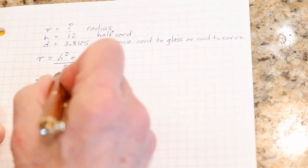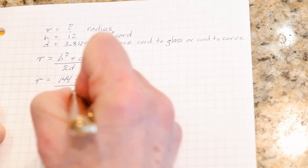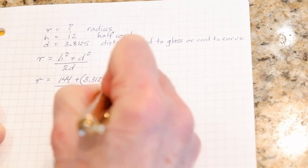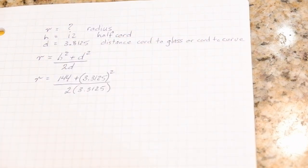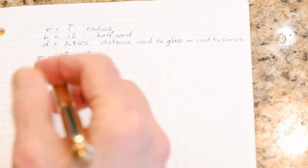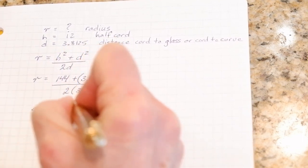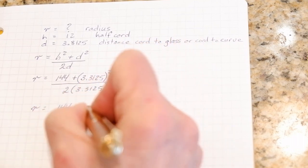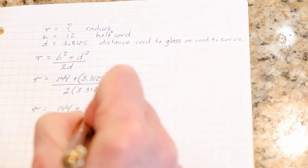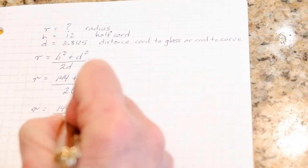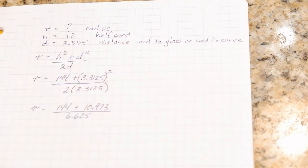And down here 2D, so that will be twice, 2 times 3.3125. So let me just get a calculator and I'll work that out. So R is equal to 144 plus 10.973, and that's going to be divided by 6.625. So 154.973 divided by 6.625 equals 23.39.